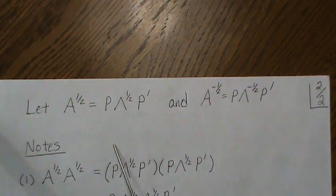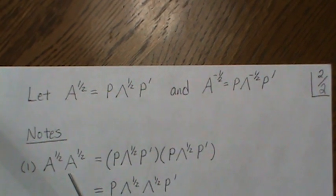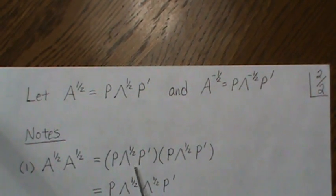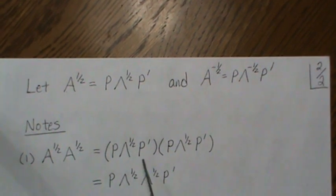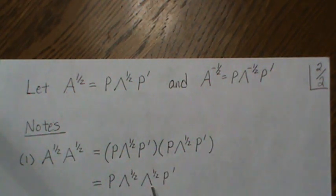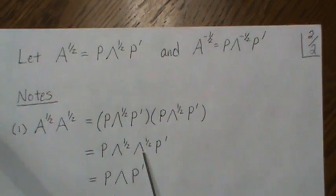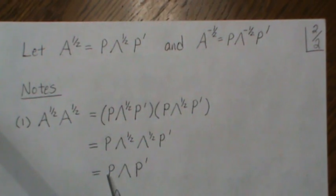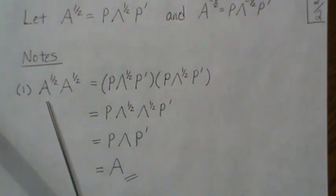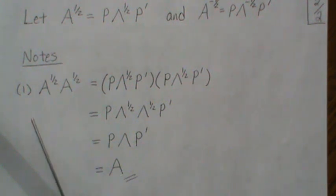And we're going to show that these matrices satisfy our goals. So if we have A to the one-half times A to the one-half, and we plug in what we're proposing as the square root matrices, then when we multiply this out, P prime P is the identity matrix and that goes away in the matrix product, and we just get this. But lambda to the one-half times lambda to the one-half we showed was lambda. So we get P lambda P prime — which is the spectral decomposition of A. So the product of these square root matrices does equal A.